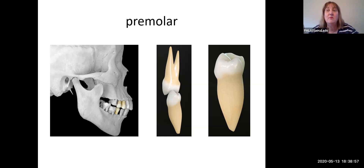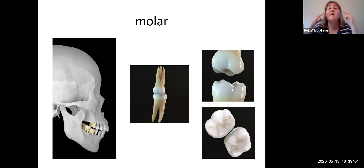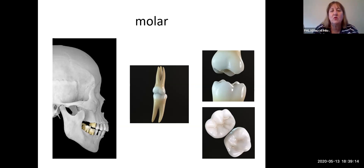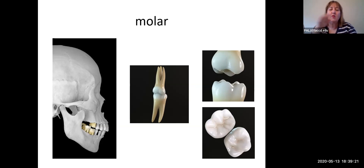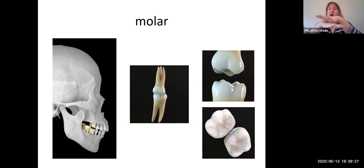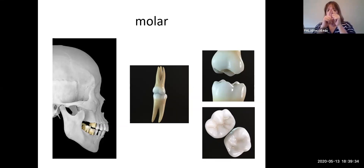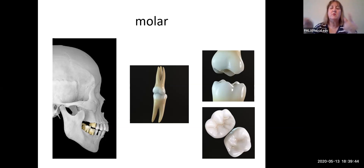The molars — three on each side — will always have multiple roots: either two roots, one thick and one normal, or three roots, which is why they're often called tricuspids. When you look at the surface of a molar, it's flat — not absolutely flat, it has hills and valleys — but it has a very flat grinding surface, as opposed to the incisor's cutting edge or the canine's point.